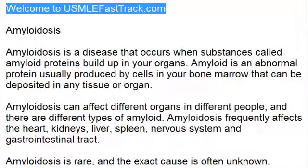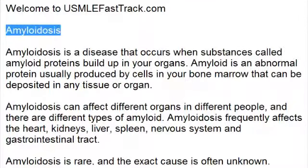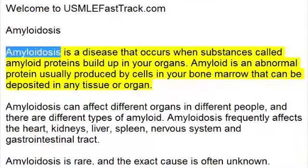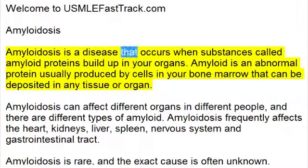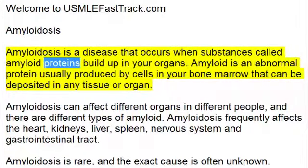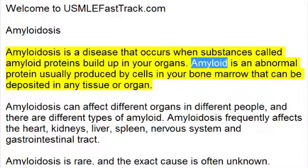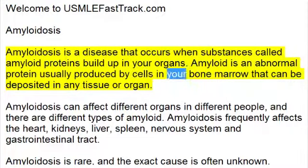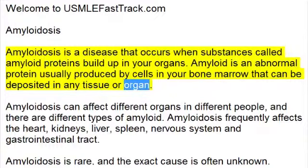Welcome to usmlefasttrack.com's extra help medical videos. Amyloidosis is a disease that occurs when substances called amyloid proteins build up in your organs. Amyloid is an abnormal protein usually produced by cells in your bone marrow that can be deposited in any tissue or organ.